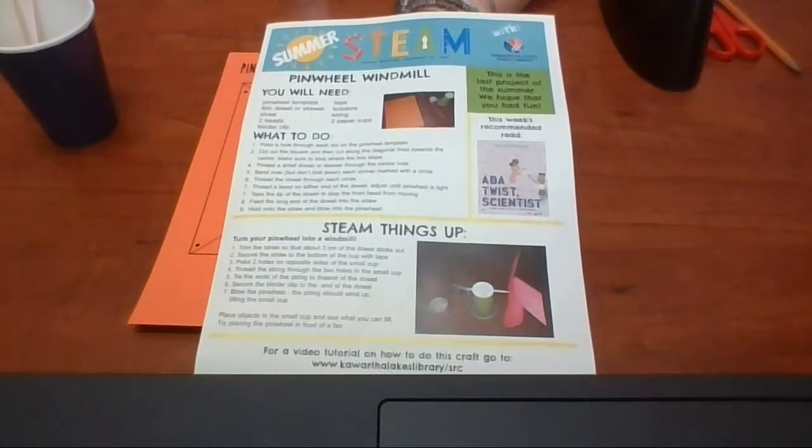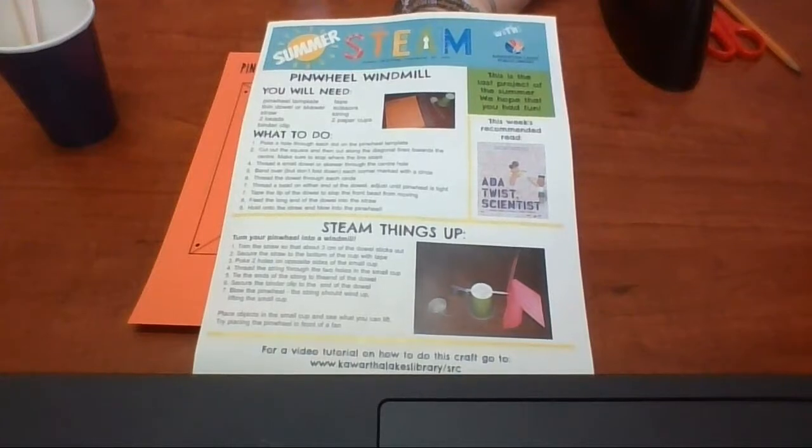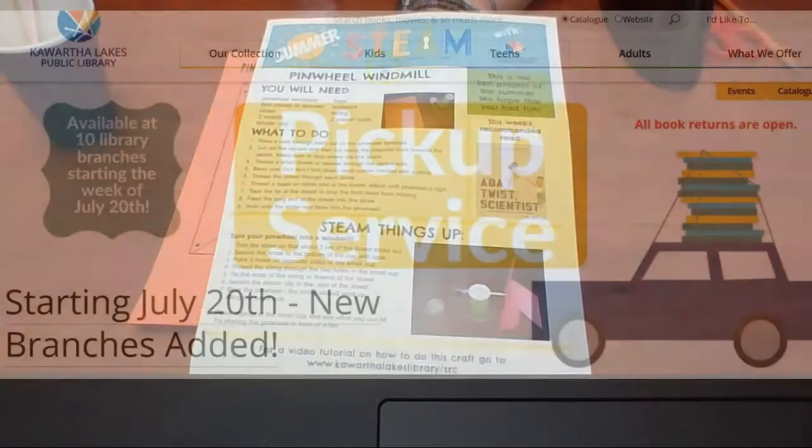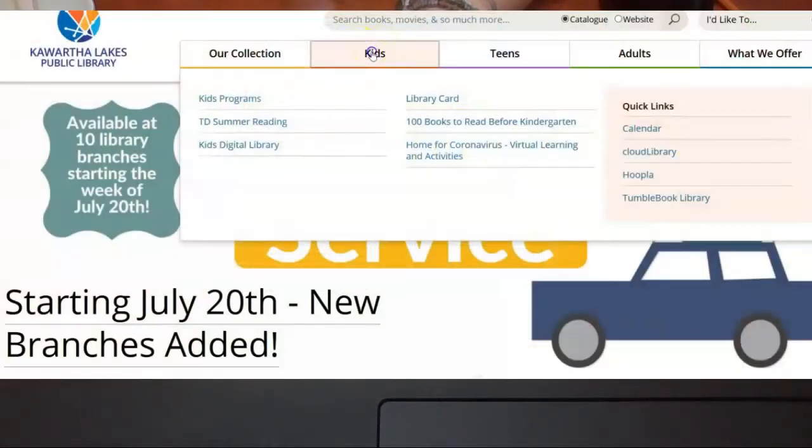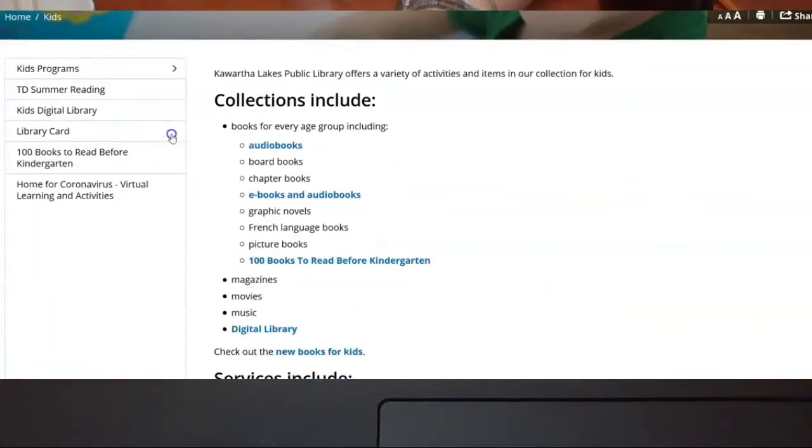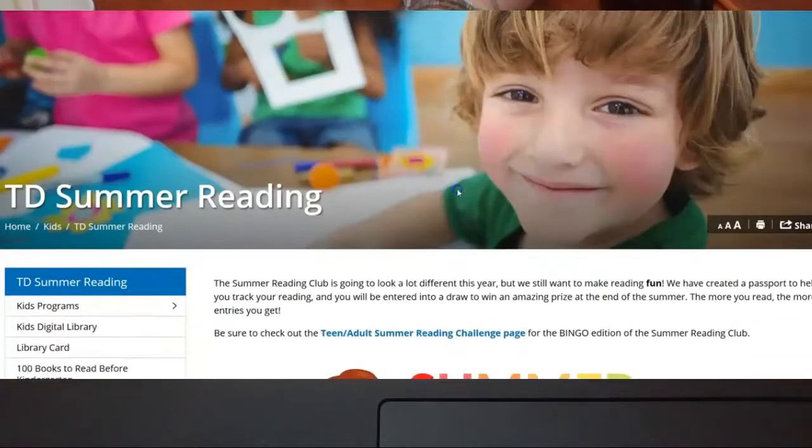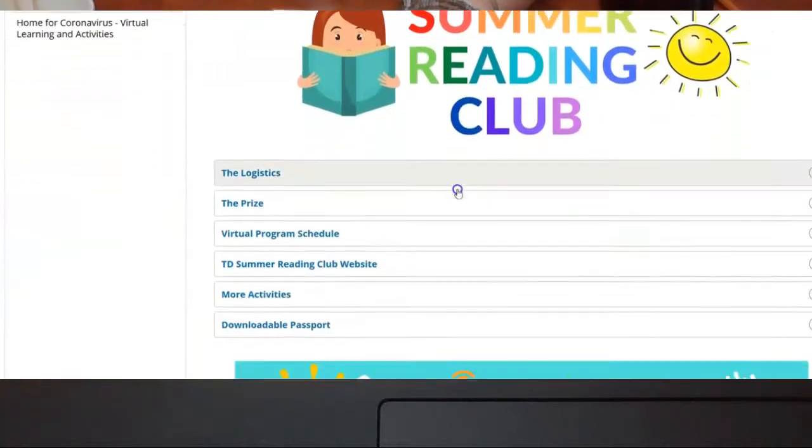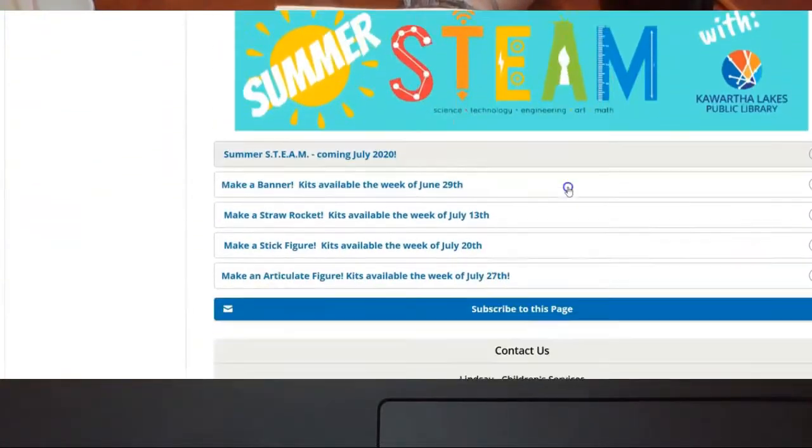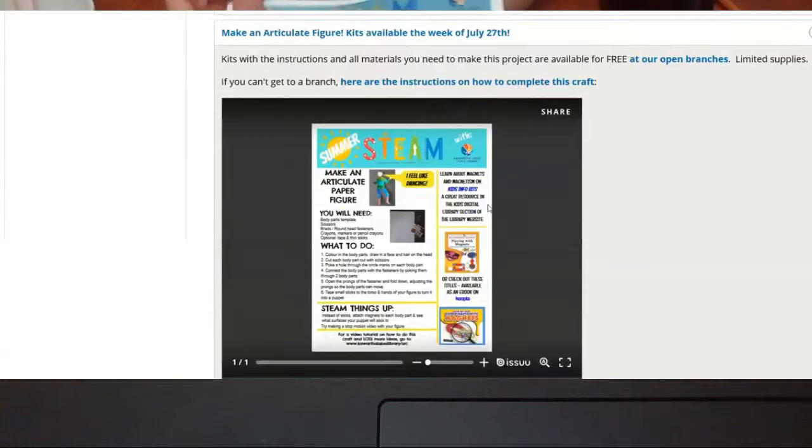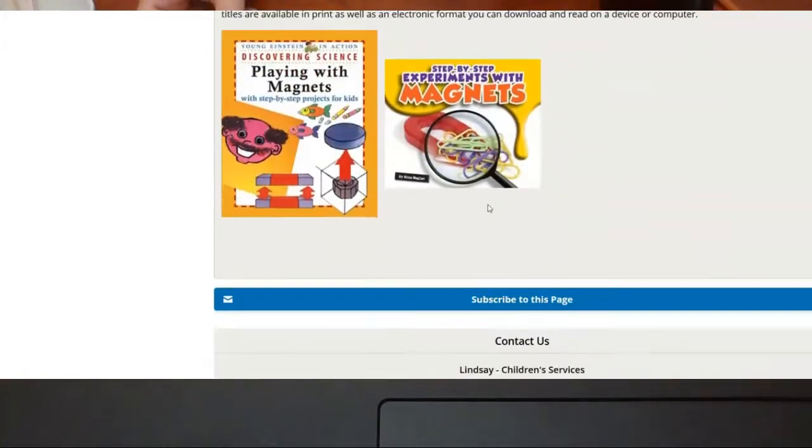Go to www.kawarthaLakesLibrary.ca, go to the kids section, go to TD Summer Reading, and then scroll down until you see the steam banner. Scroll down until you see this week and open that up, and you'll find the instructions and this video and some tips and suggestions on how to further steam this project up.